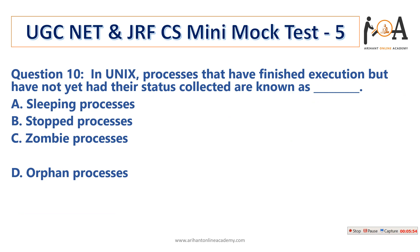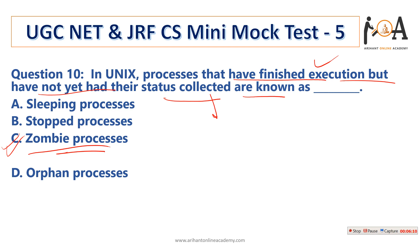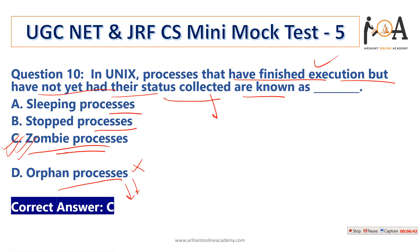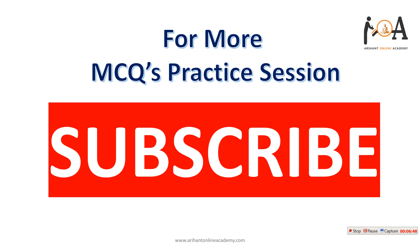The next question: in Unix, processes that have finished execution but have not yet had their status collected are known as zombie processes. Sleeping processes are those in the process queue but not currently executing. Stopped processes have completely halted. Orphan processes are those whose parent has finished executing but the child is still running. So option C — zombie processes — is the correct answer. Do solve the first four mini mock tests as well, and comment any doubts. Have a very nice day guys!